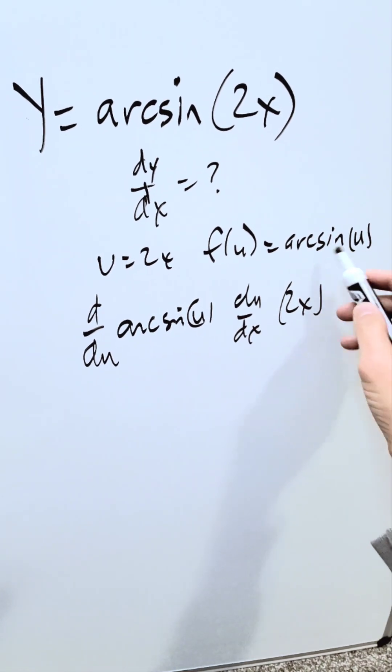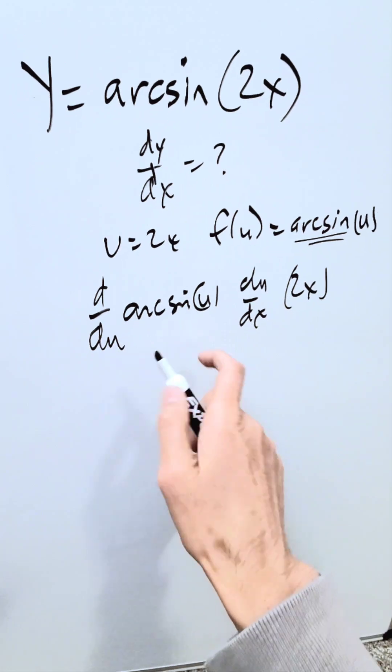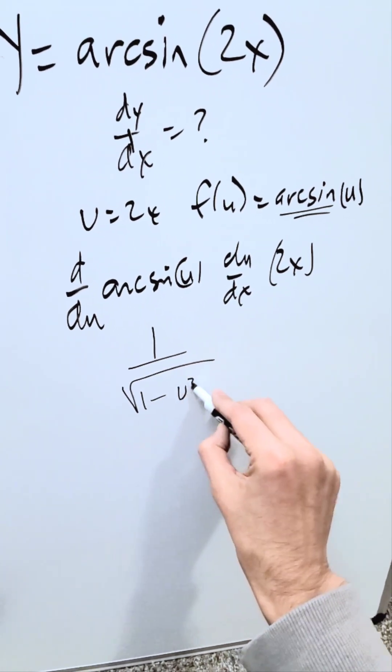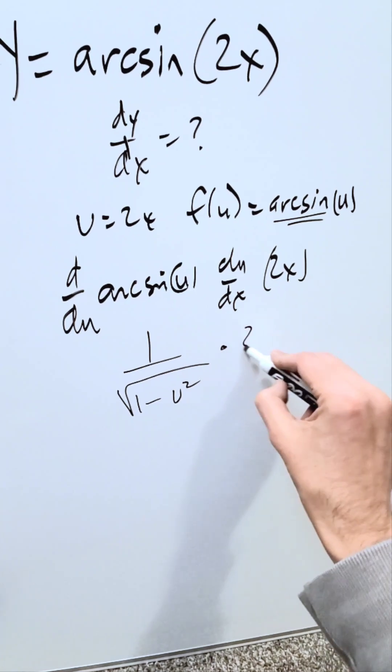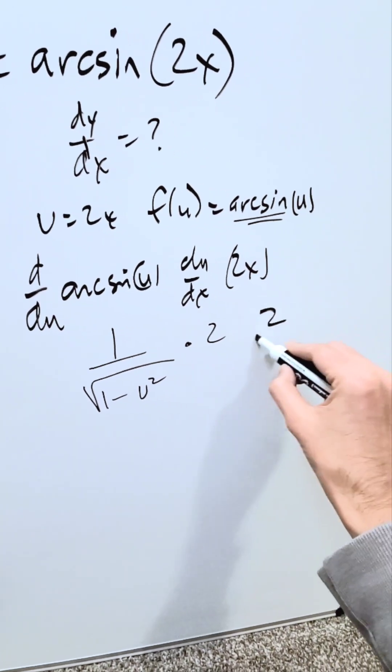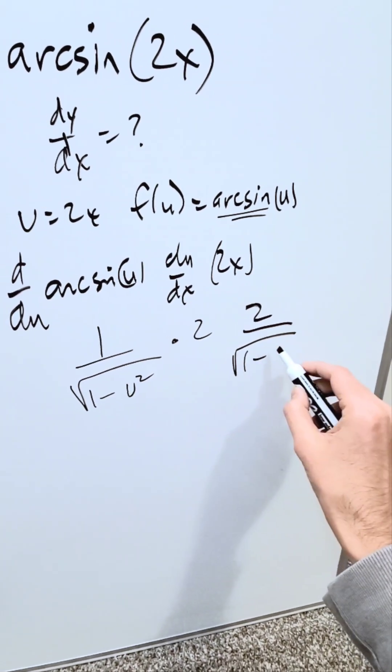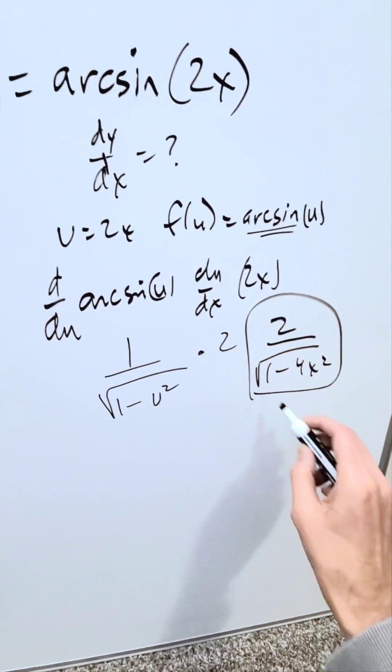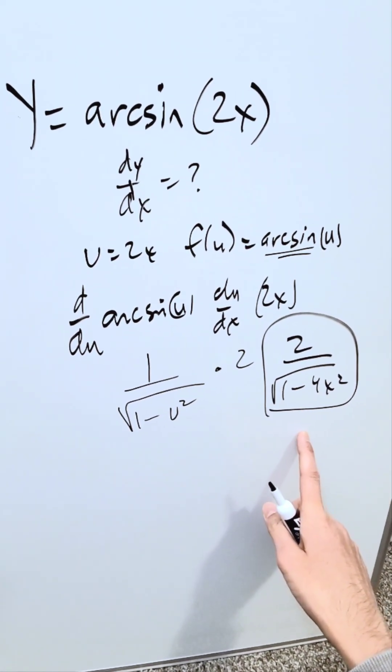This right here is the preferred approach. If you know the derivative template for that, the derivative template for that will be 1 over square root of 1 minus u squared. And the derivative of 2x will be a 2. Combine these. You'll have a 2 over square root of 1 minus u squared. What was u? It was 2x squared, 4x squared. This right here is your end result. This is the preferred direct approach.